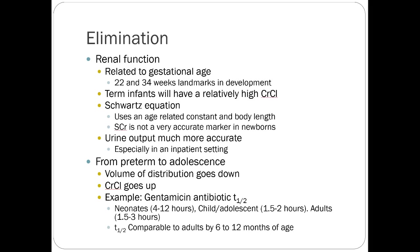Renal function is related to gestational age — 22 and 34 weeks are landmark developments. Prematurity is going to affect renal and pulmonary function especially. Term infants generally have high creatinine clearance, but we use different equations in kids — something called the Schwartz equation, which uses an age-related constant and looks at body length versus creatinine as a biomarker. Urine output is generally the most accurate marker — especially in neonatal intensive care. It's always the best marker of kidney function.